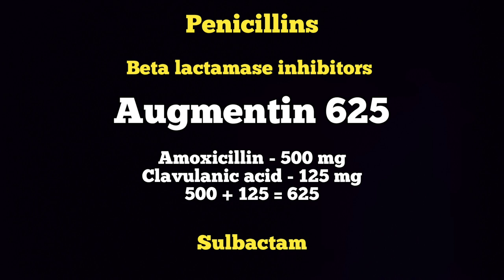These drugs can be used in the market and are very effective against both gram-positive and gram-negative organisms. The effect is synergistic — that's why clavulanic acid and sulbactam are combined with penicillin. The dosing can be used twice or thrice daily. This is why Augmentin 625 and related combination drugs are used.